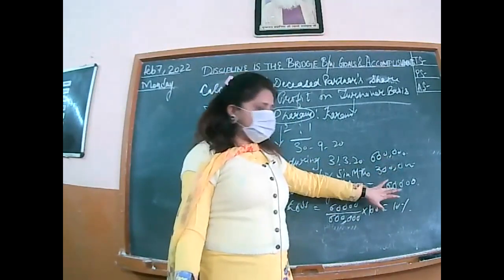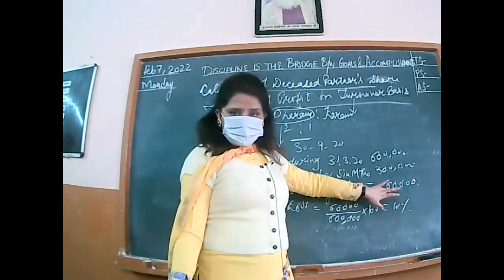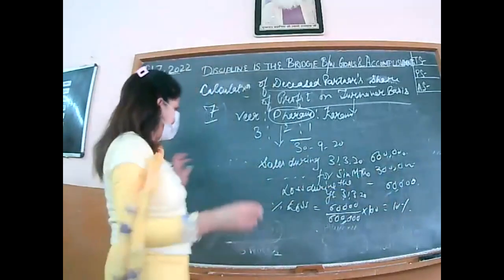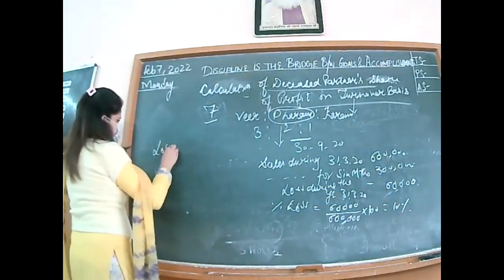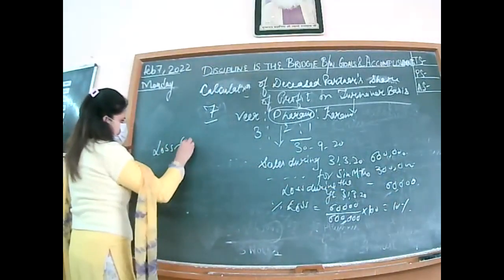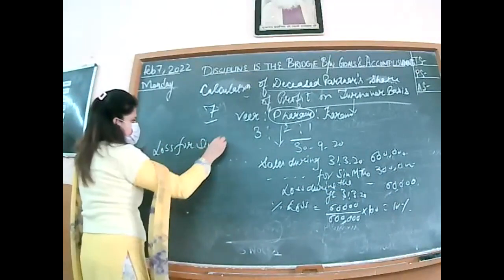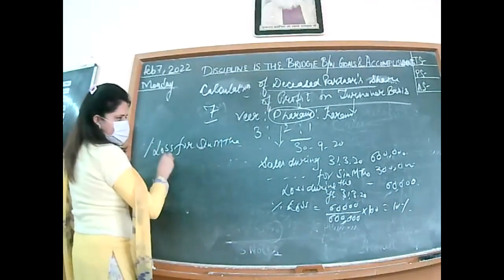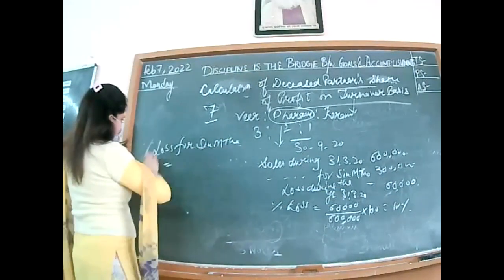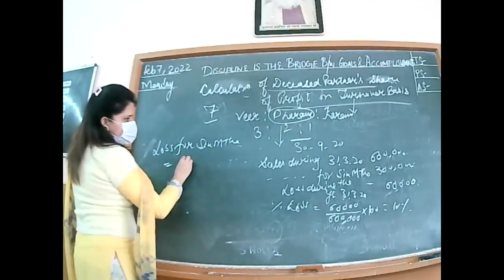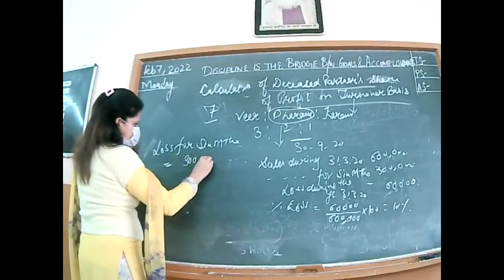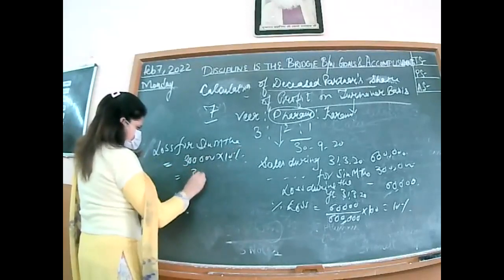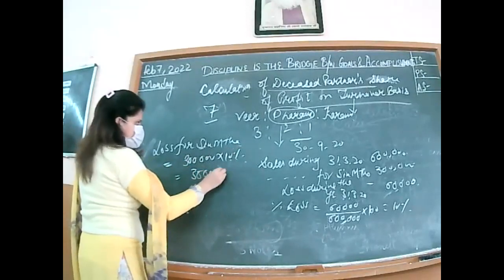The loss for the year ended 31st March 2020 is 60,000 (not 6,000 — I misread it). Percentage of loss = 60,000 loss ÷ revenue from operations (i.e., sales of 6 lakh) × 100 = 10%. Applying this same 10% on the 6-month sales of 3 lakhs: 3 lakh × 10% = 30,000 loss for 6 months.